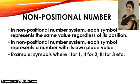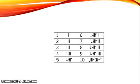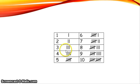Each symbol represents the same value regardless of its position in a number. To find the value, one has to count the number of symbols present. For example, one is written as a single vertical line, two as two vertical lines, three as three vertical lines — all these lines, irrespective of their place, have the same value of one.